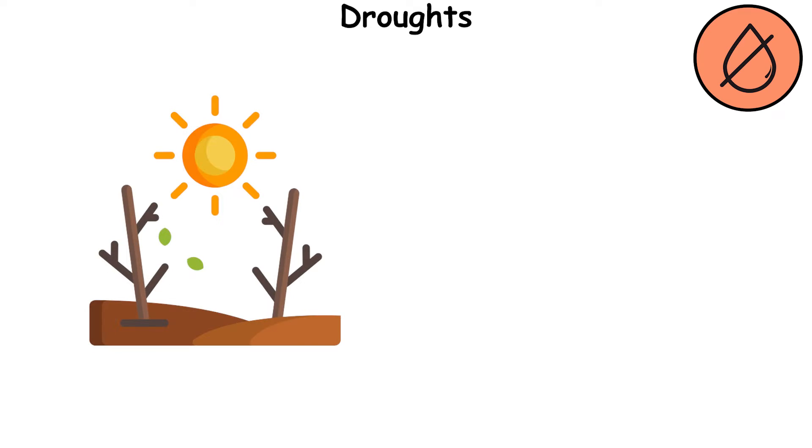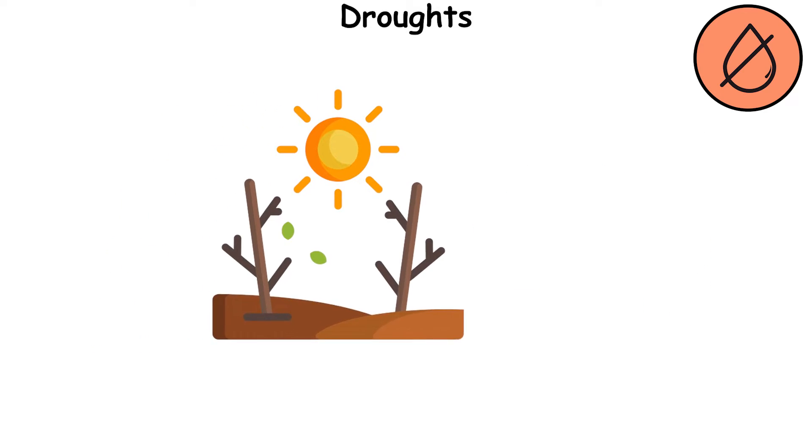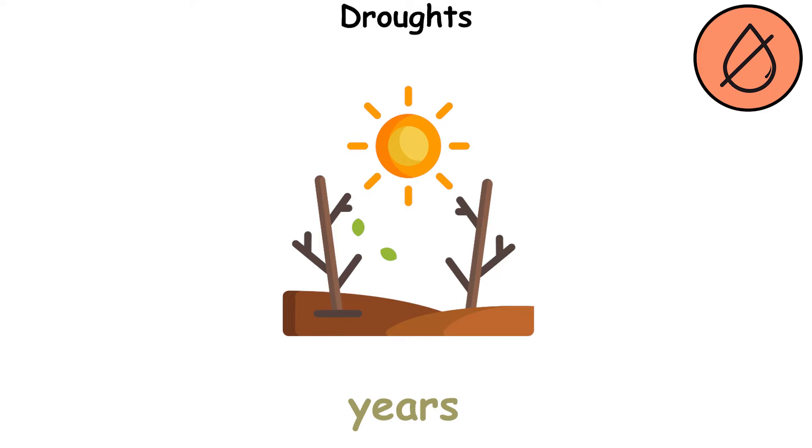A drought is a prolonged period during which precipitation is less than normal. A drought can last for days, months or years.